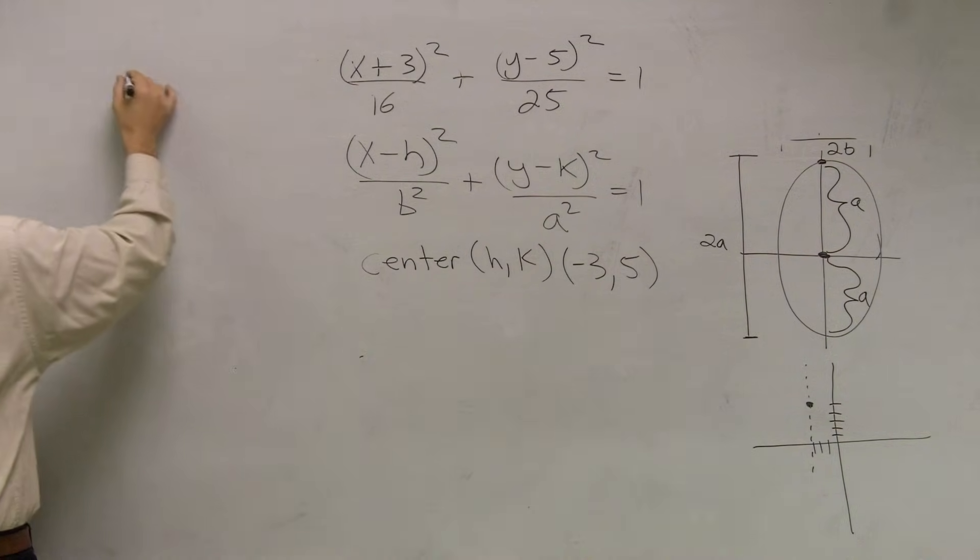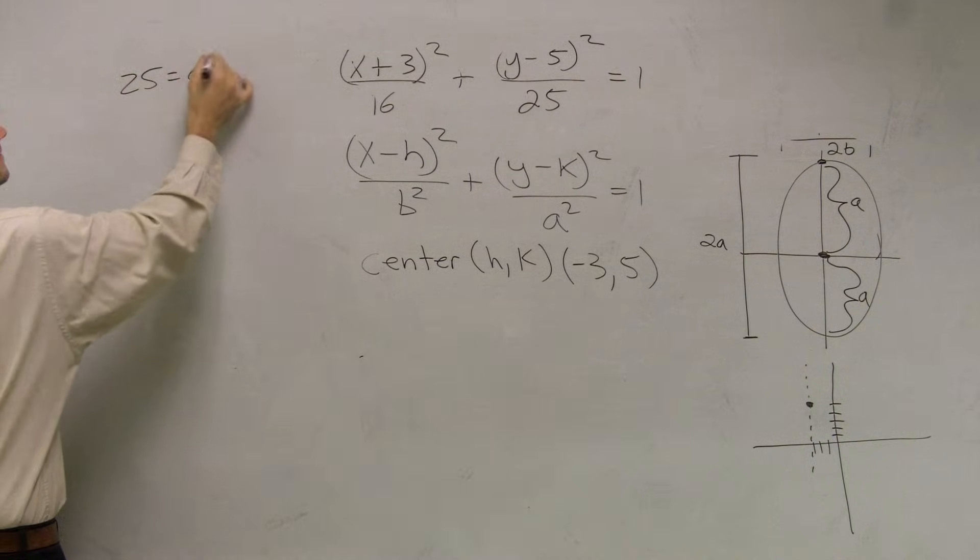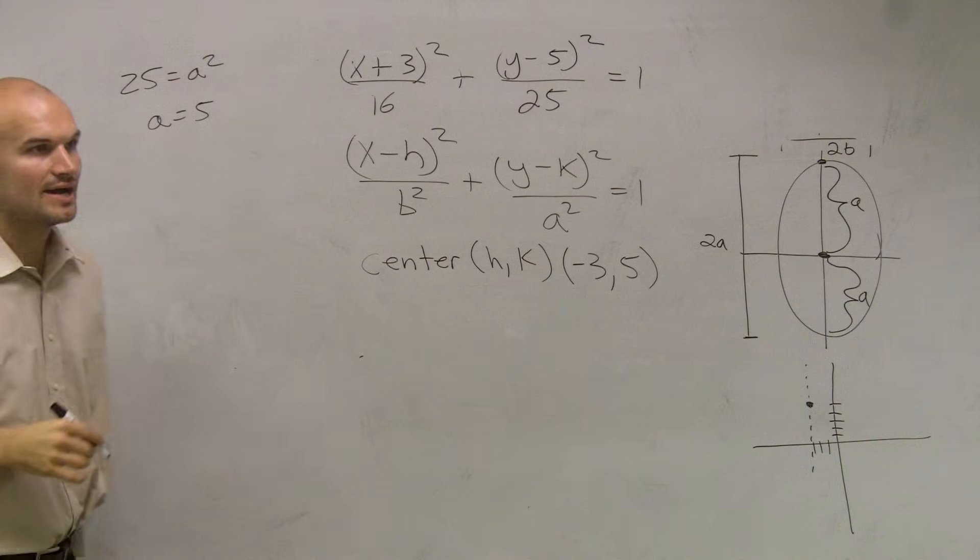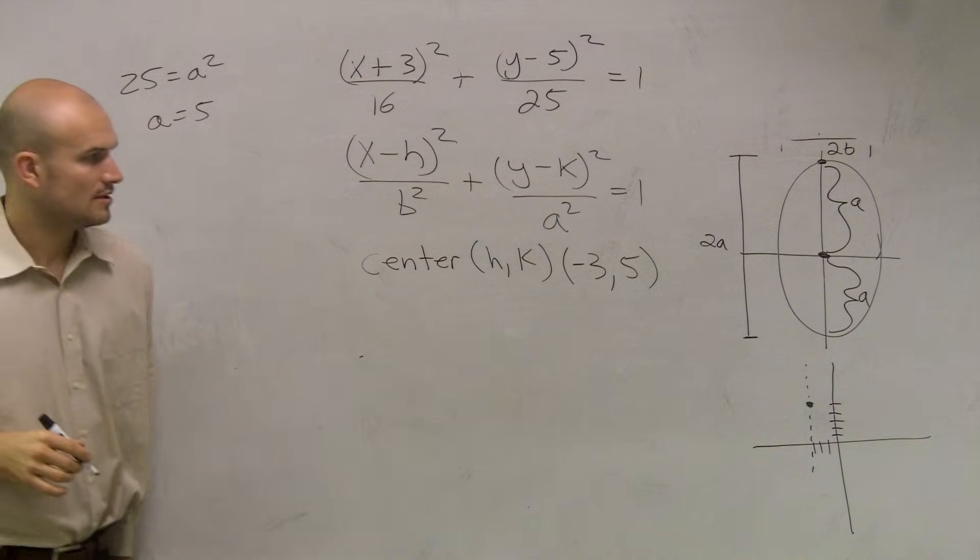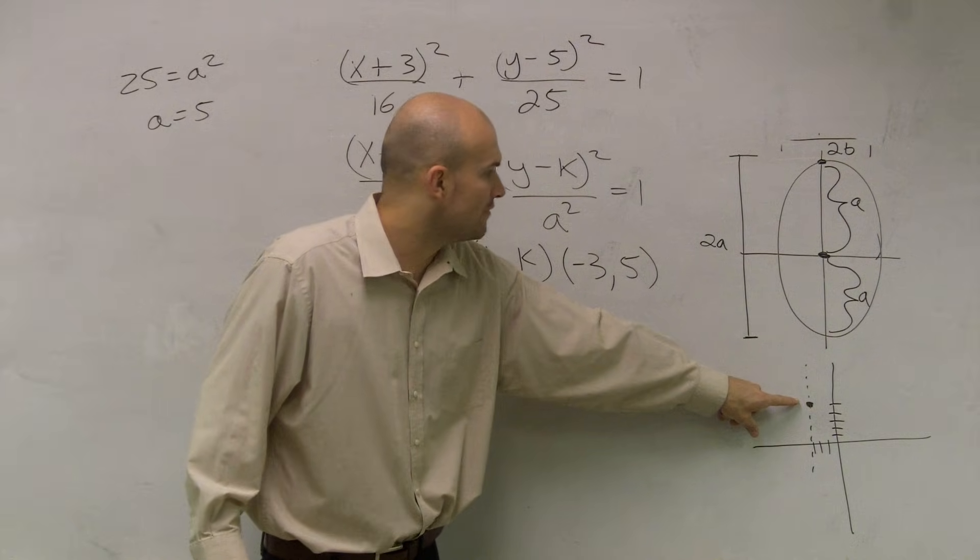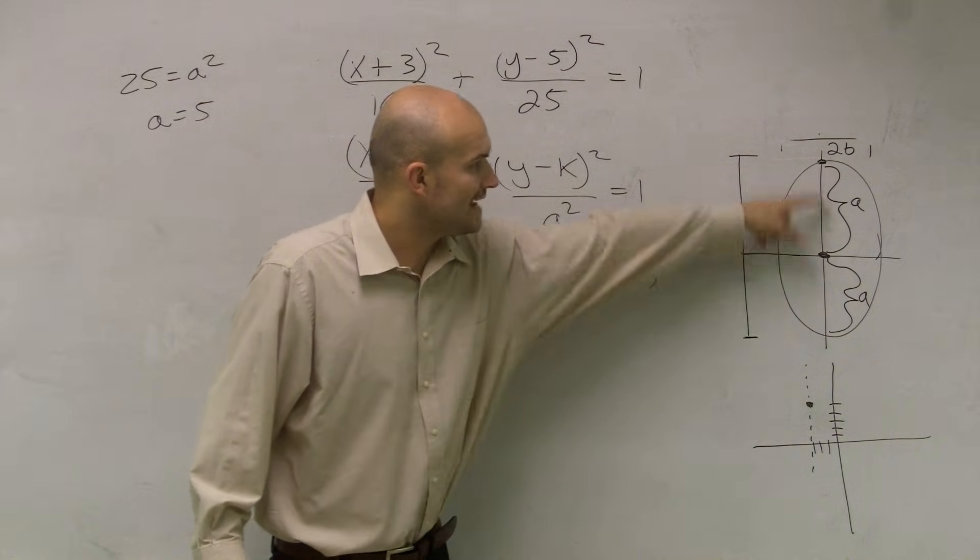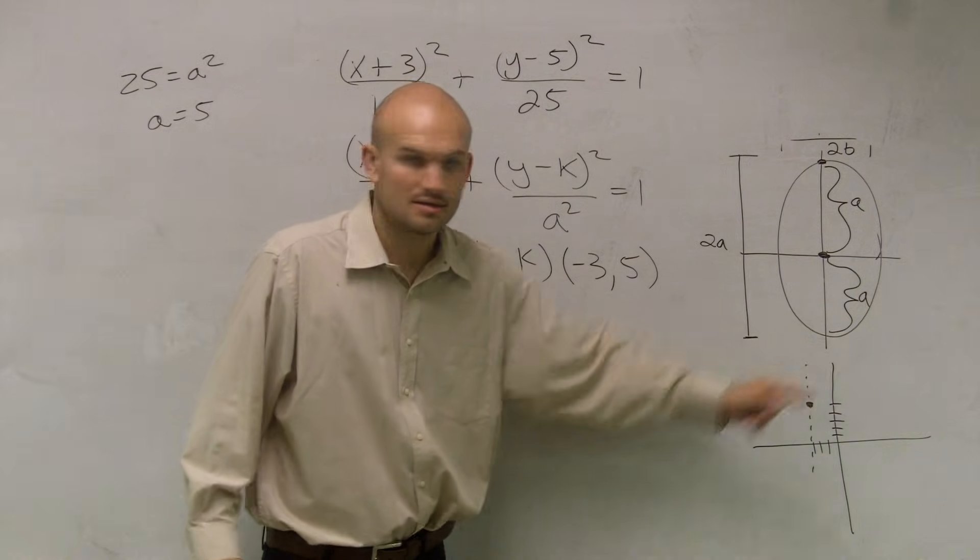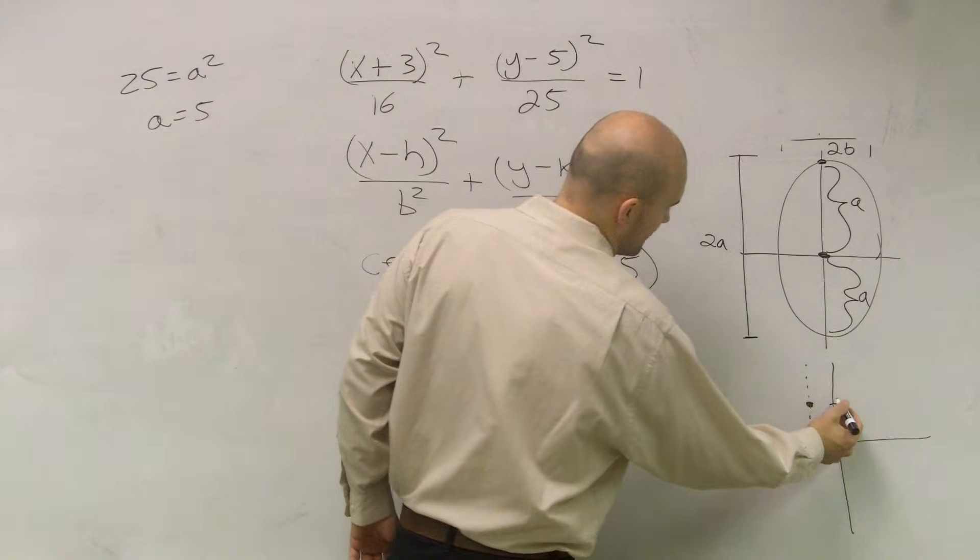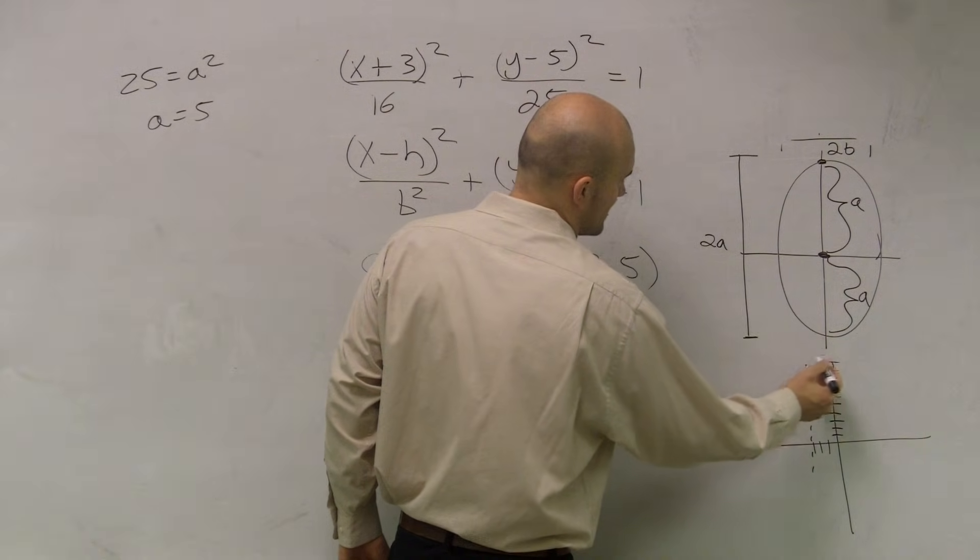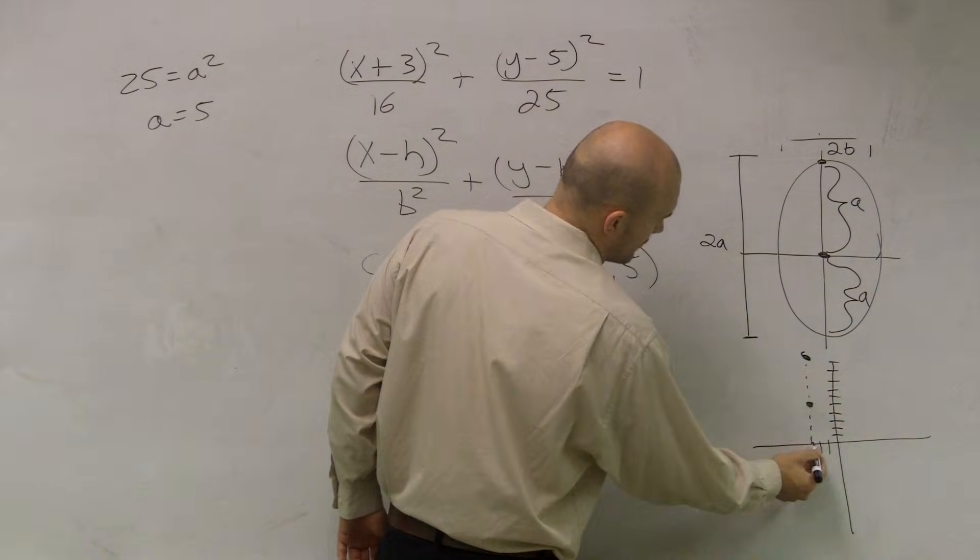So if I say, all right, well, here's my center at negative 3, 5, and my vertices has to be a distance up and a distance down. Make sense? So the first vertices, another 5 up, so if I'm at negative 3, 5, 6, 7, 8, 9, 10, and then down 5, which would be at 0.